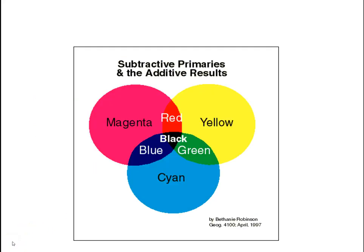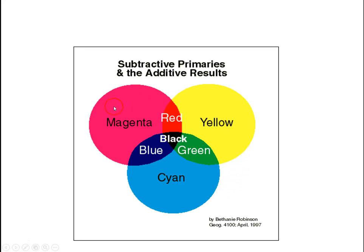I'm going to end this here and we'll do a lab where you can see all this in action. Just remember: if you have magenta and yellow, mixing those two gives you red. Cyan and magenta will give you blue. Yellow and cyan will make green.